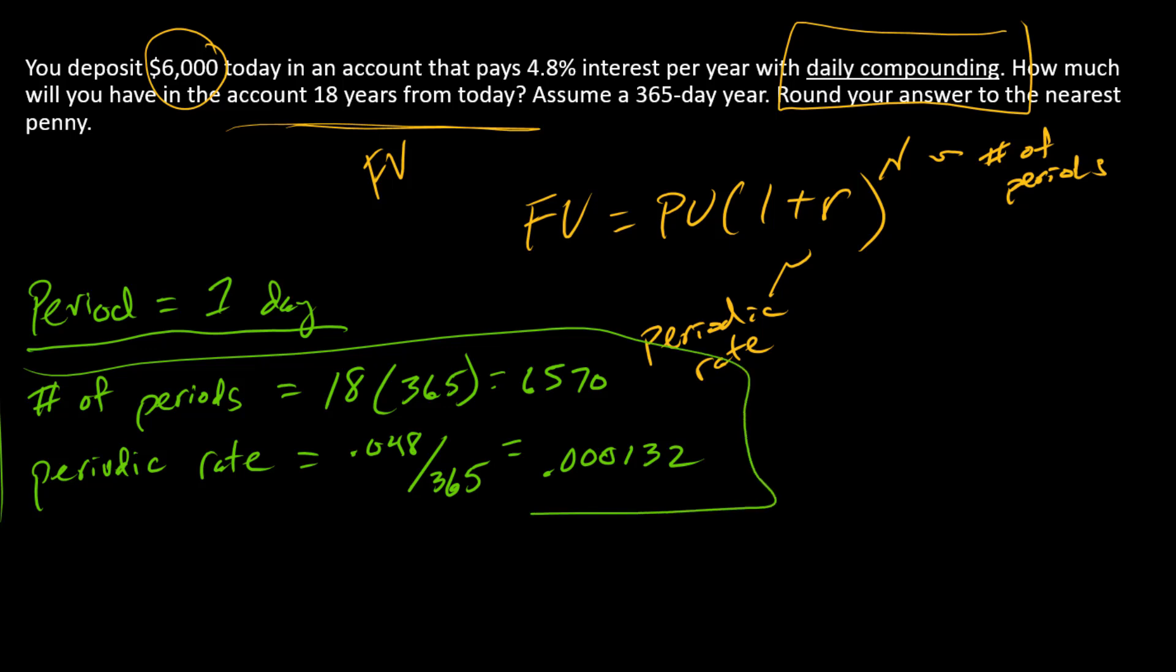All right, so these are the important inputs. Now let's do the math. The FV is not 18, it's going to be FV 6570, because it would be 6,570 ticks on our timeline. That's how many days are in 18 years. That is going to equal 6,000 times (1 plus the periodic rate).